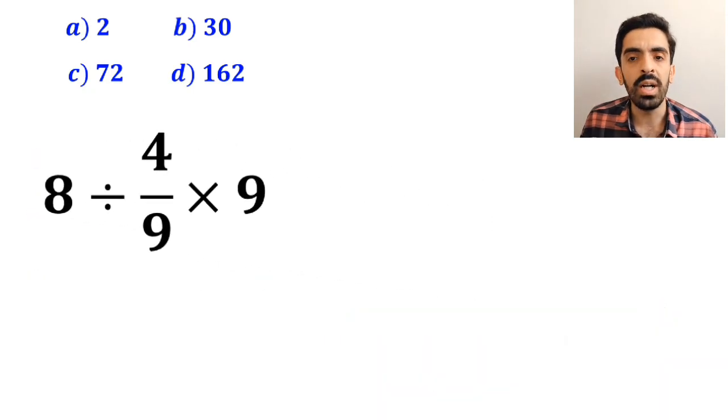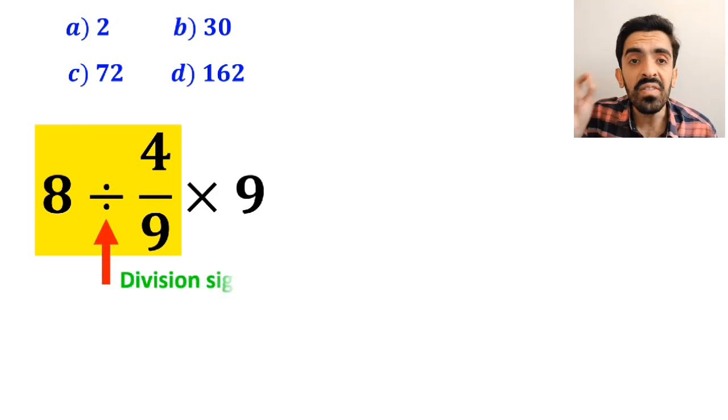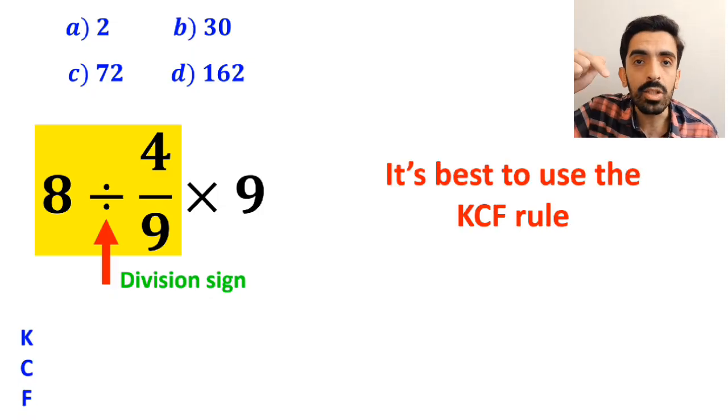So, first we perform the division between 8 and 4 over 9. Whenever we see a division sign between two terms, it's best to use the KCF rule. In this rule, K stands for keep the first number as it is.